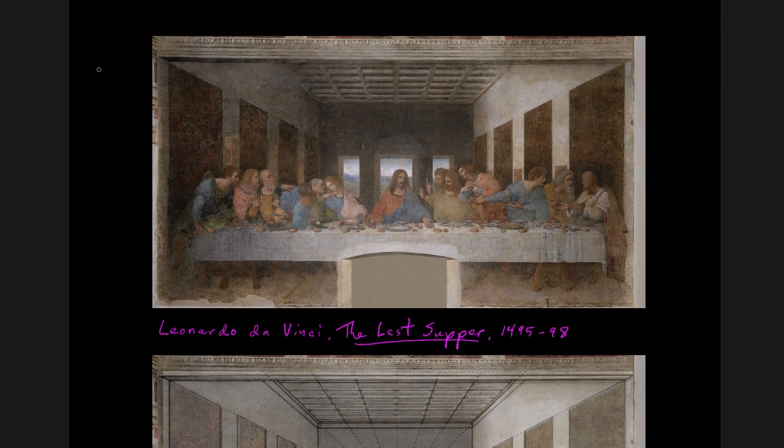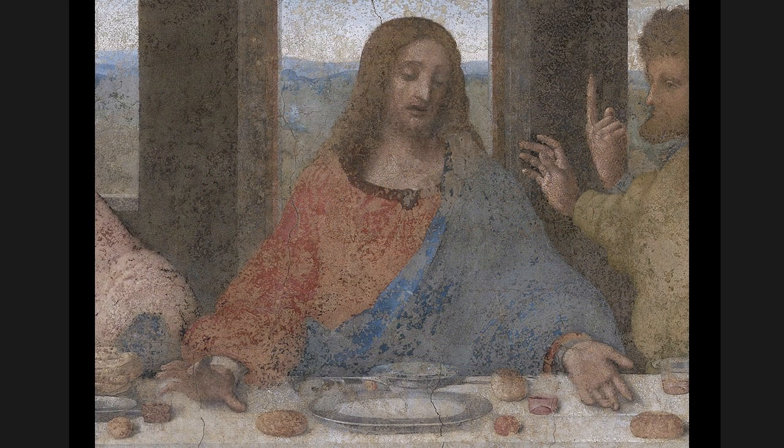Immediately the interesting thing is that after Brunelleschi discovers linear perspective, artists like Masaccio begin to use it but they realize that in addition to creating an illusion of space it has a way of bringing the viewer's attention to the vanishing point. So artists begin to use it not just to create that illusion but they begin to use it expressively and that's what we really see here with Leonardo. So not only is Leonardo creating this beautiful perspectival space but he's also focusing our attention on Jesus Christ at the center who is the vanishing point.